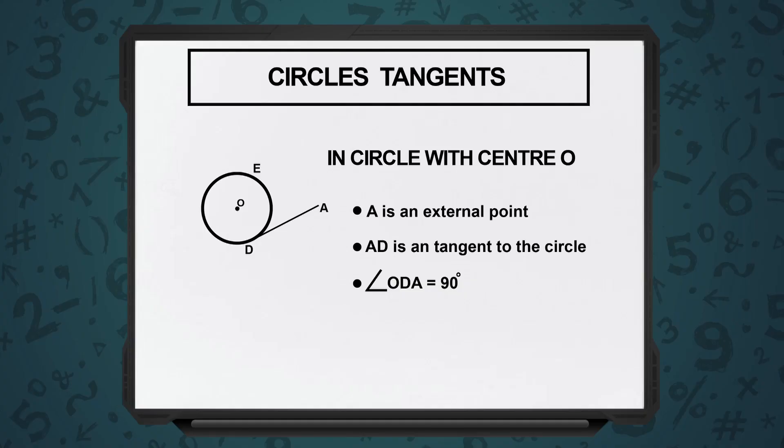First, let us understand tangents. We have this circle with center O. We have an external line. There is some point A outside and we draw a line which just touches the circle in one point at the circumference. This kind of a line is known as a tangent.